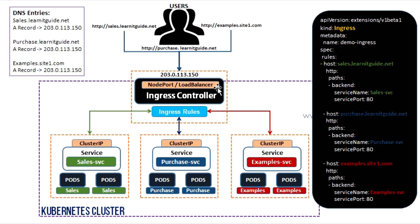Controlling traffic through ingress rules only works when you have set up your Kubernetes Ingress Controller — without it, ingress rules will not work. There are many projects that support ingress controllers: popular ones include Nginx, HAProxy, Istio, and Traefik. On public clouds there is Google Cloud, Amazon, Azure, and more. In this session I will use the Nginx project.